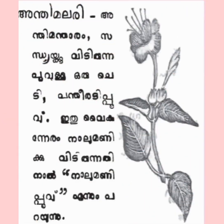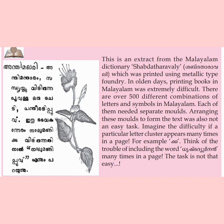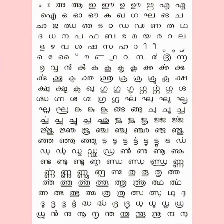This is an extract from the Malayalam dictionary Shabda Tharavali, which was printed using metallic type foundry. In olden days, printing books in Malayalam was extremely difficult. There are over 500 different combinations of letters and symbols in Malayalam, and each of them needed separate molds.